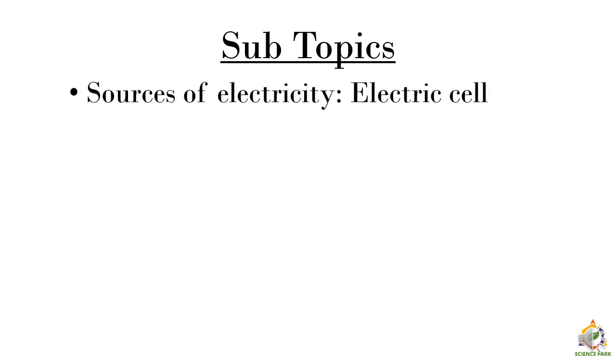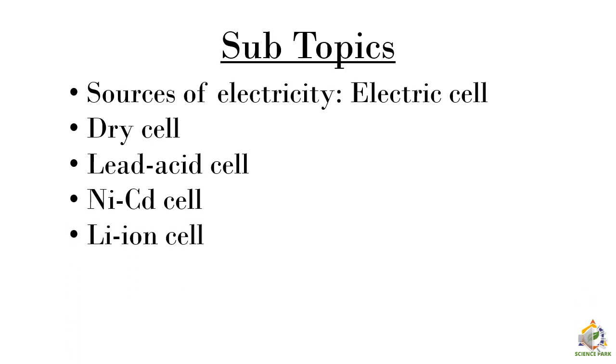We are going to see the sources of electricity and electric cell which we have seen in the last part. Then we are going to see the types of electric cell one by one. First dry cell, lead acid cell, NICD cell, Li-ion cell, solar cell. Then we are going to see about battery and in the end what is AC and DC.